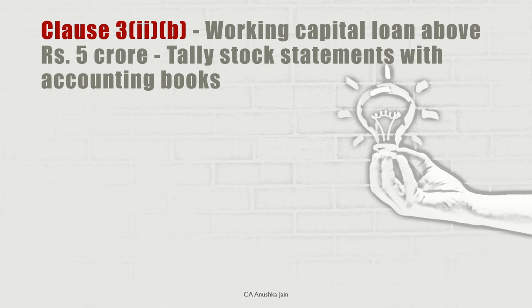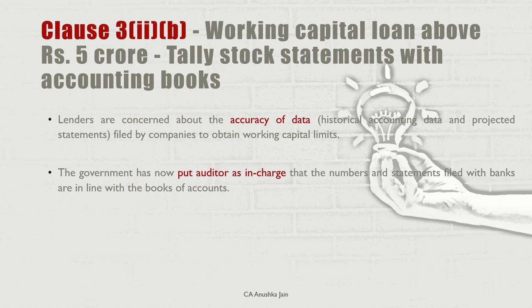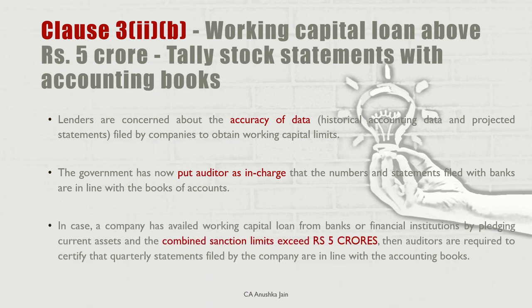Next new clause is 2B. Ye deal karta hai with companies having working capital loan above 5 crore rupees. Companies file a lot of accounting data — past information and projective statements — to banks and financial institutions to obtain working capital limits. Banks statements ki accuracy ko lekar hamesha concerned rehte hain. Ab government ne auditor ko incharge bana diya hai to state if these statements filed with banks are in line with the books of accounts. Practically dekhe to ye clause koi mushkil ki baat nahi hai — agar hum statutory auditors hain then most probably jo stock statement jama hogi that will be audited by us.